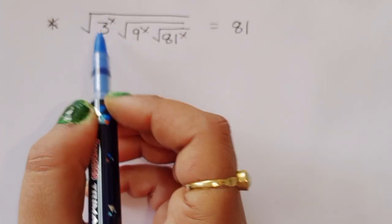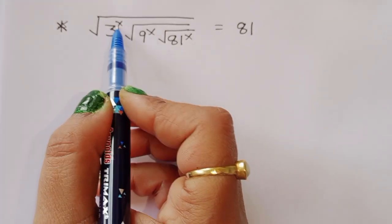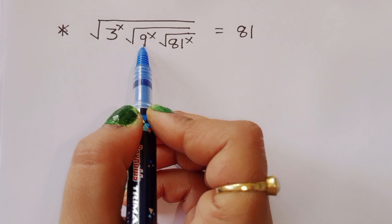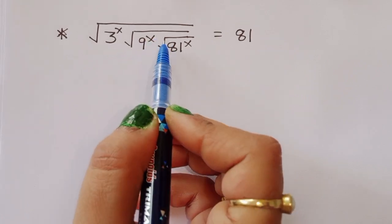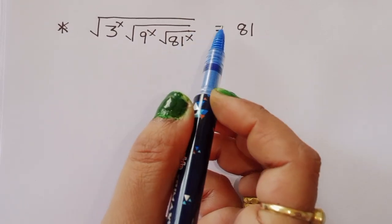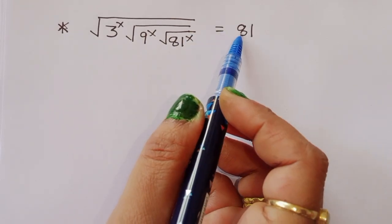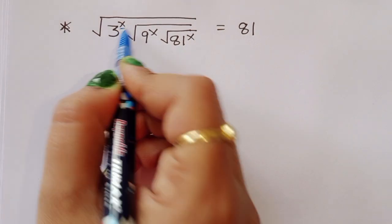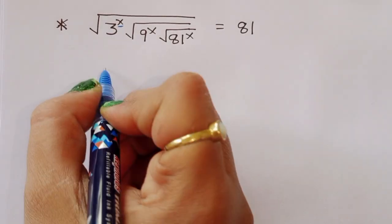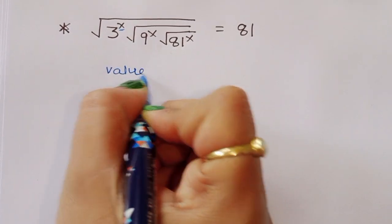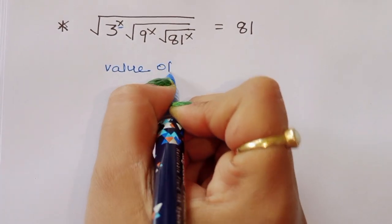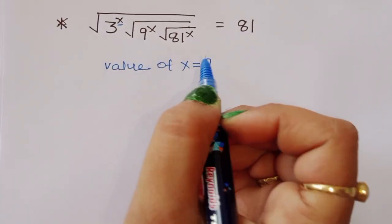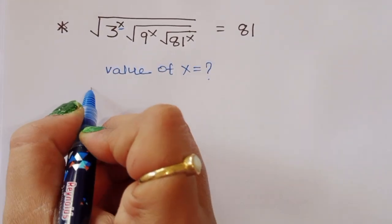The question is given: square root of 3 power x, times square root of 9 power x, times square root of 18 power x is equal to 81. We have to find out the value of x. Let's see the solution.